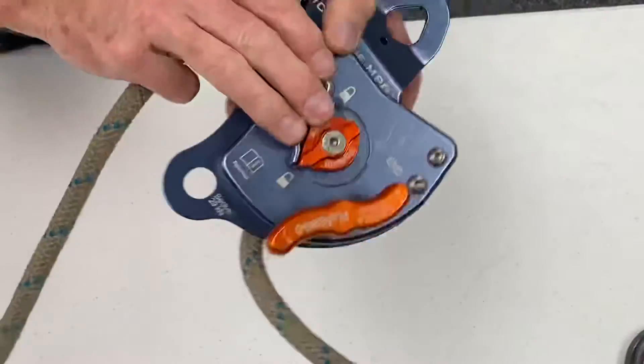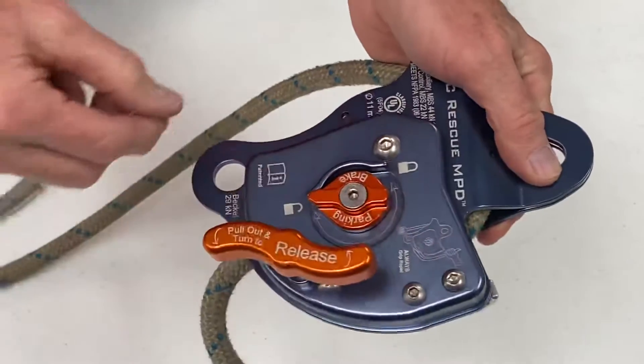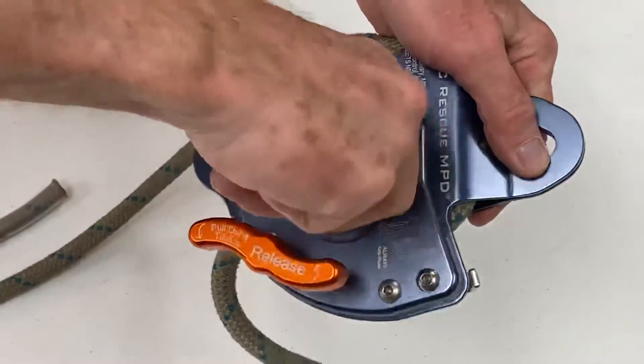At that point we can turn it back over into our orientation we're going to use it. We can change the parking brake, lock it up.